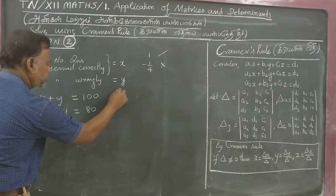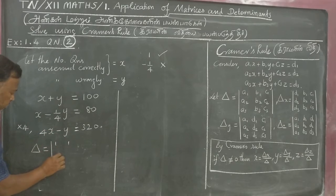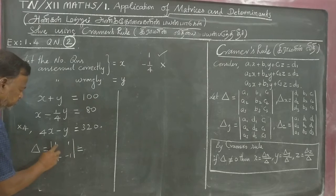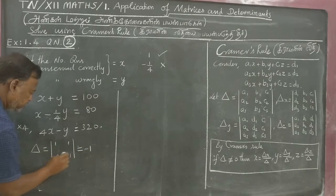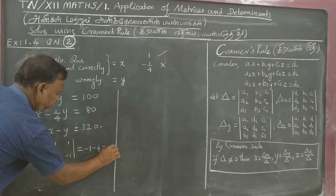Now the values by Cramer's Rule. First find delta. Delta is 1, 4; 1, minus 1. Four minus one, expand minus 1 minus 4 is equal to minus 5.